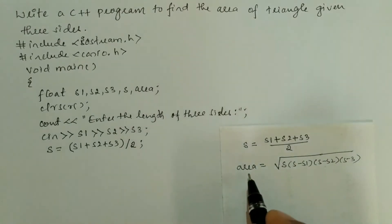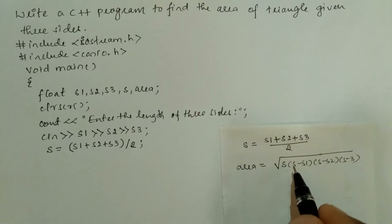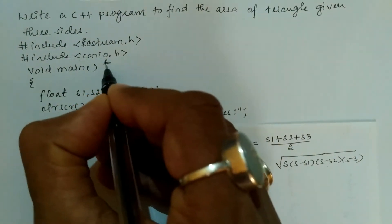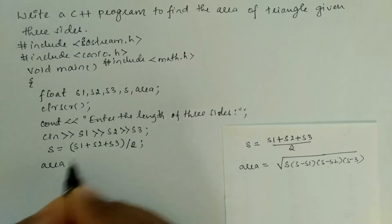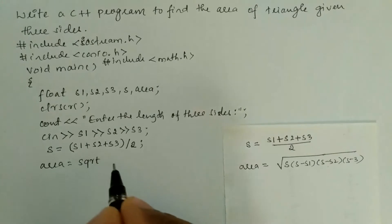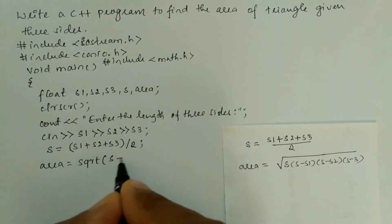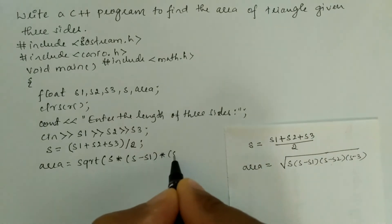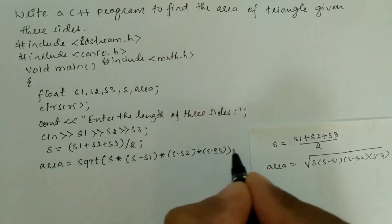Next we calculate the area. We cannot write square root directly, so we use the inbuilt function sqrt(), which is present in the math.h header file. So we add hash include math.h before main. Then we write: area = sqrt(s * (s - s1) * (s - s2) * (s - s3)); using the asterisk symbol for multiplication, and then put a semicolon.